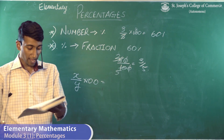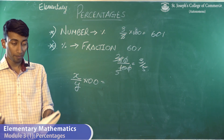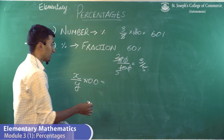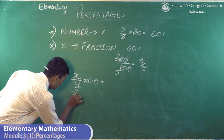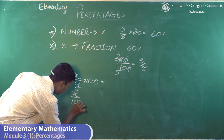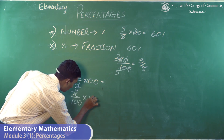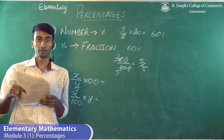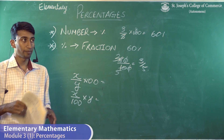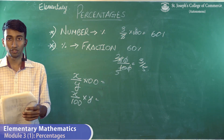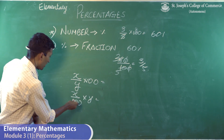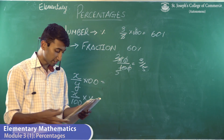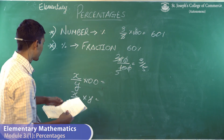And if they say 'x percentage of y', then it becomes x/100 × y. For example, 30% of y is 30/100 × y. That's how you express it.